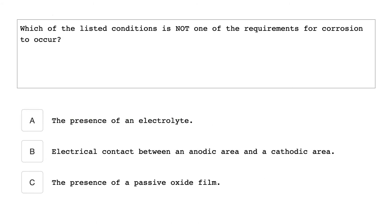Which of the listed conditions is not one of the requirements for corrosion to occur? The presence of a passive oxide film is not one of the requirements for corrosion to occur.